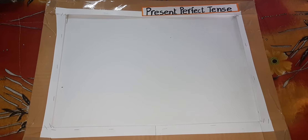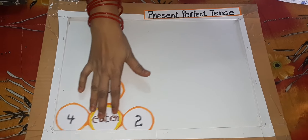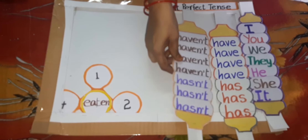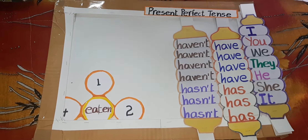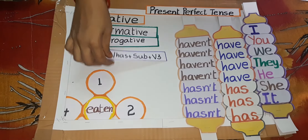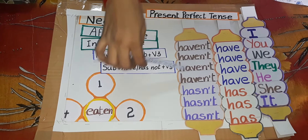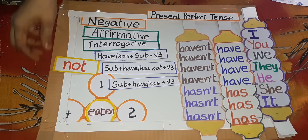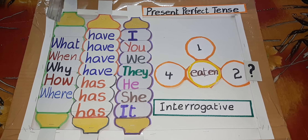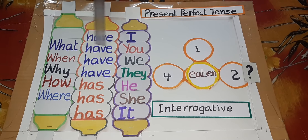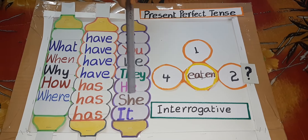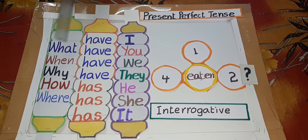ELM for Present Perfect Tense. Double H questions — Present Perfect Tense. What have I eaten? What have you eaten? What have we eaten? What have they eaten? What has he eaten? What has she eaten? What has it eaten?